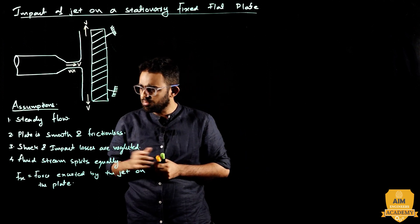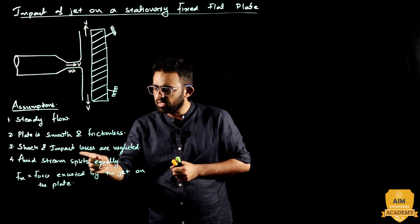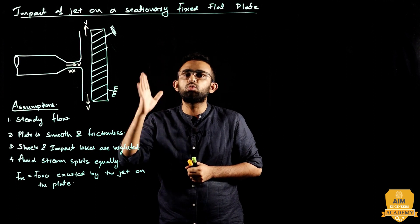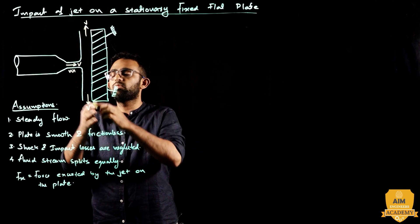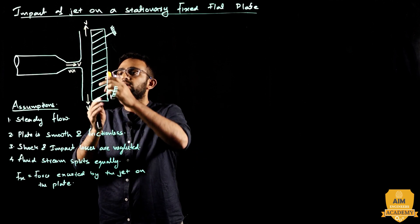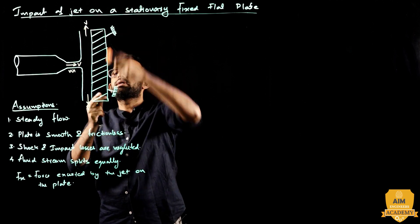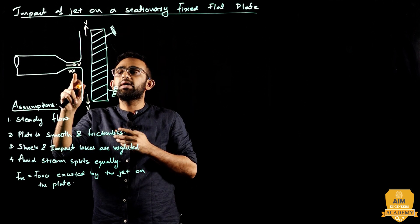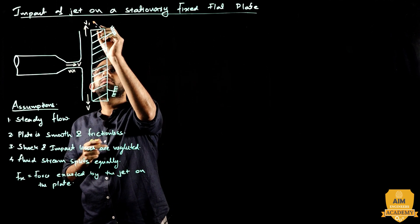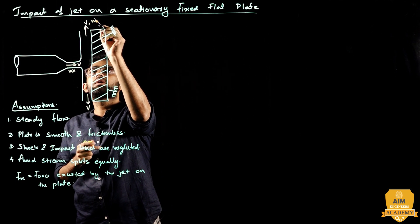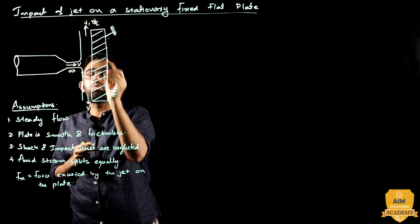The first assumption is that the fluid stream splits equally on the plate — so each side receives m/2 of the mass flow rate.